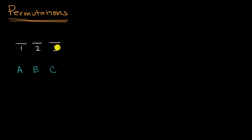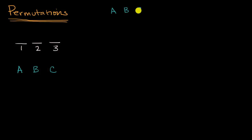Pause this video and see if you can figure it out on your own. Well, there are several ways to approach this. One way is to just try to think through all of the possibilities systematically. If I have person A in seat number one, then I could have person B in seat number two and person C in seat number three. Or, with A in seat number one, I could swap B and C. And that's all of the permutations where A is in seat number one.